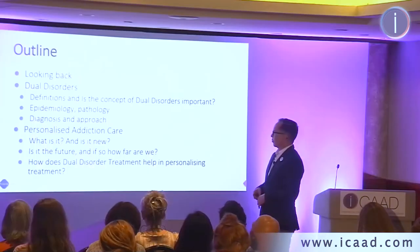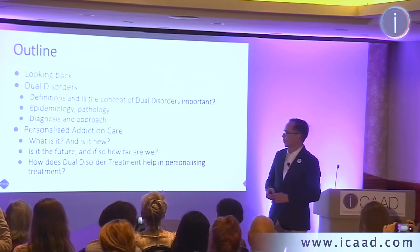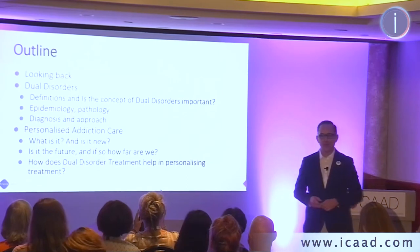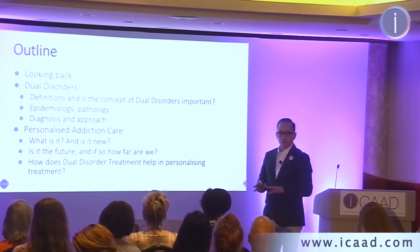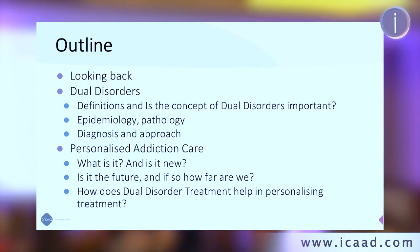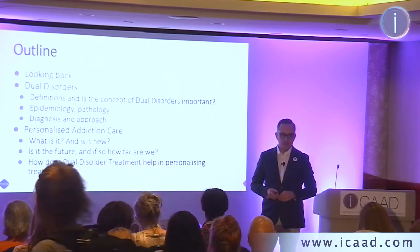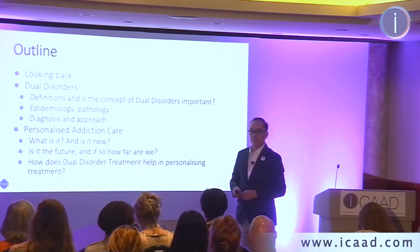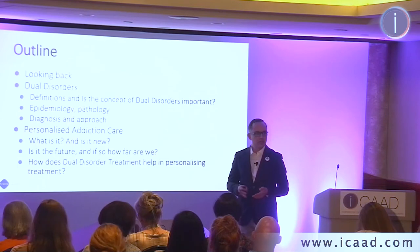For those of you who need a bit of structure and have a bit of control issues — like myself — here's an outline. I'll start off with a short history of addiction care and where we are now, then continue to look at dual disorders broadly, and end up with personalized addiction care and a few examples of how to achieve this in your own practice.